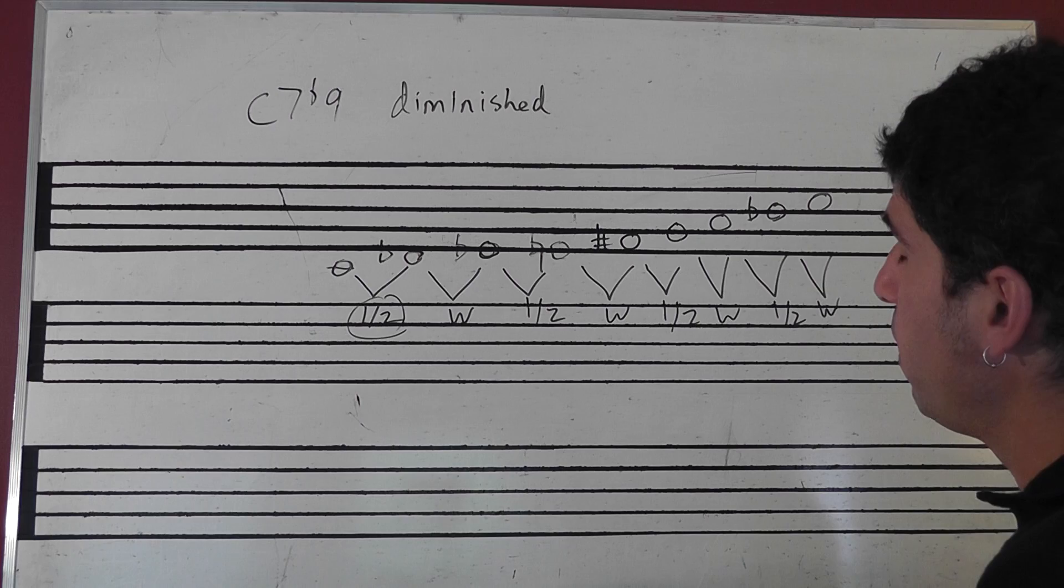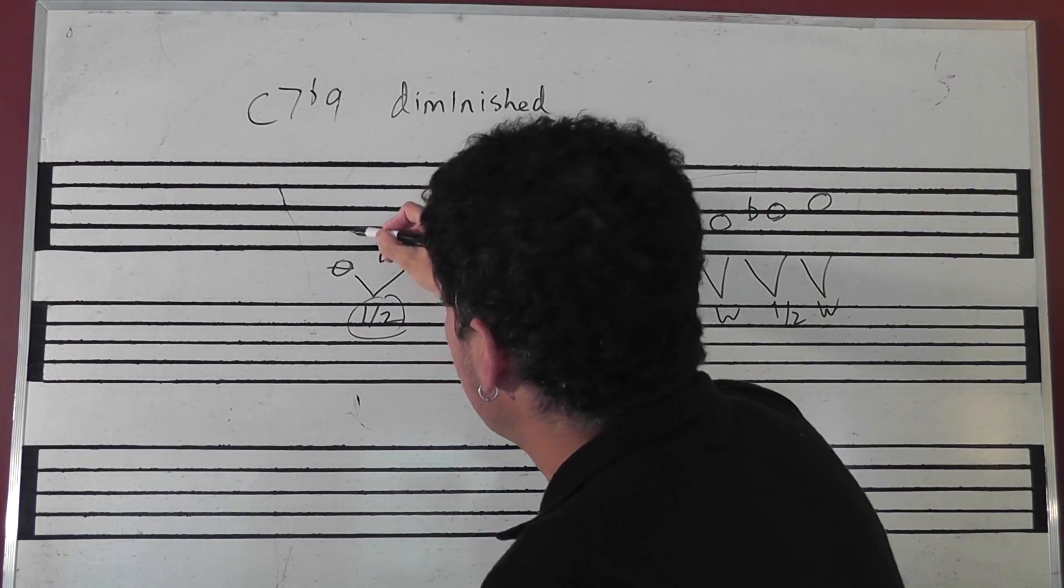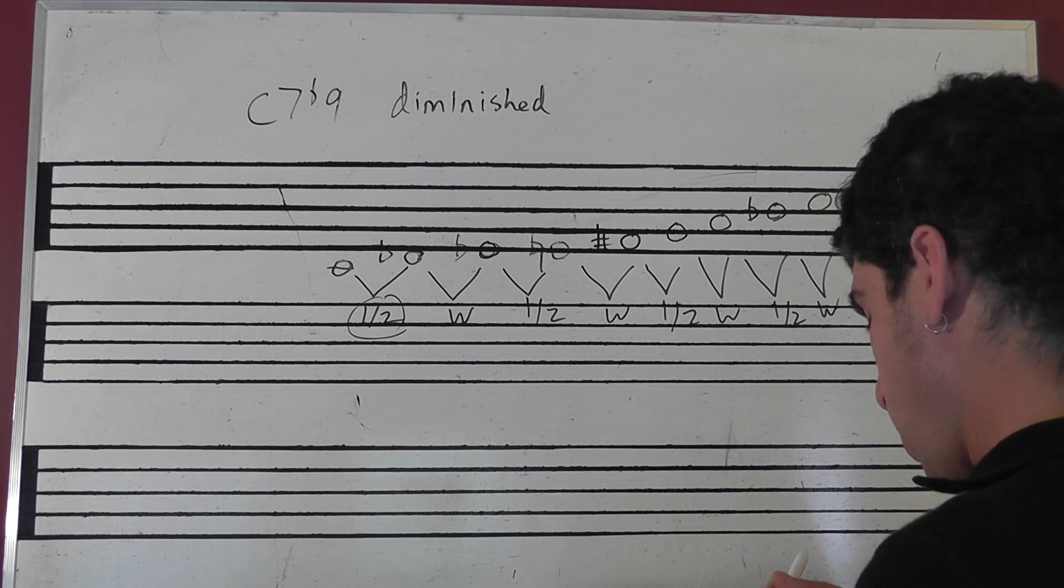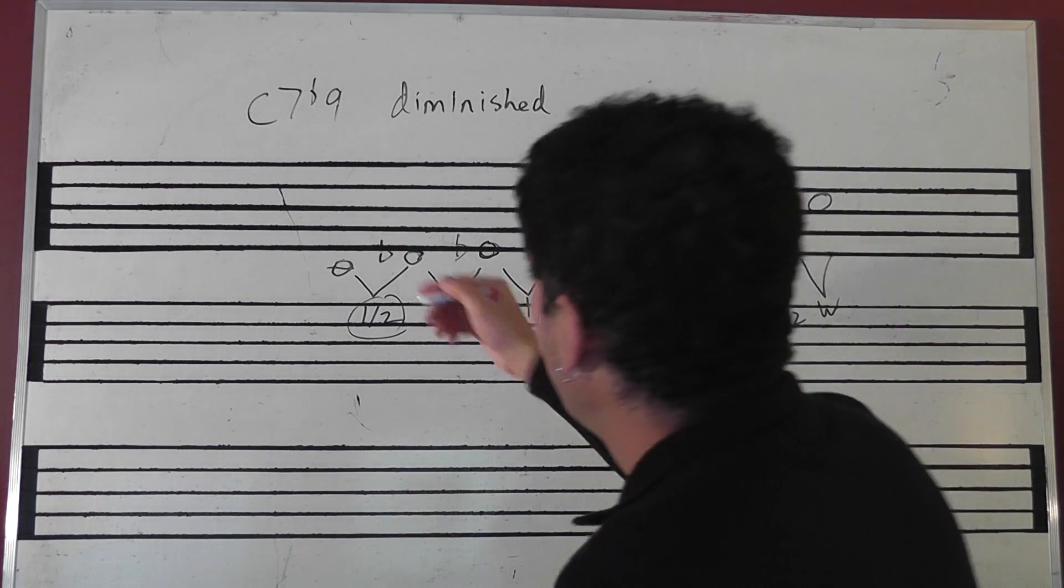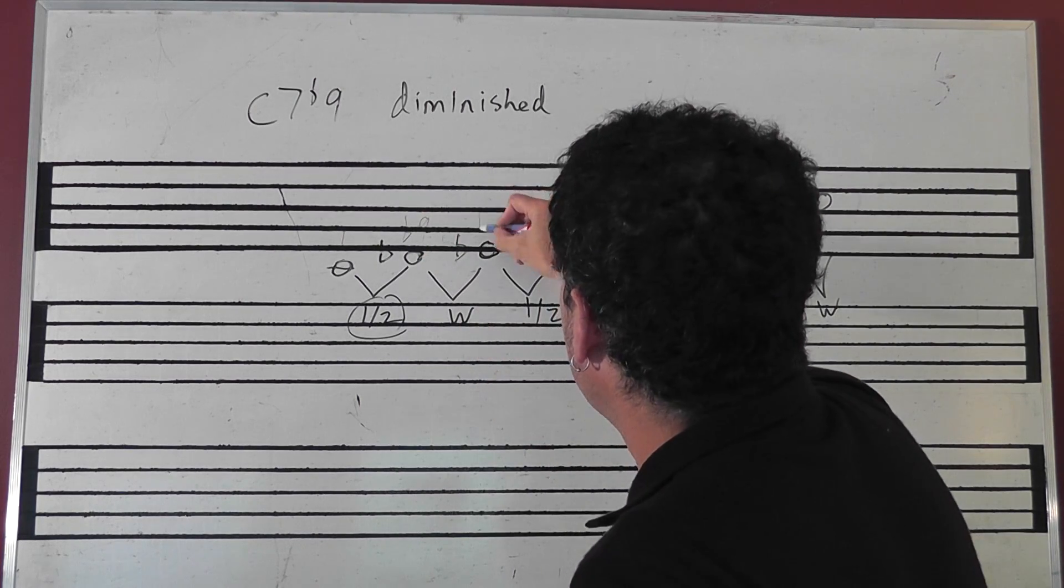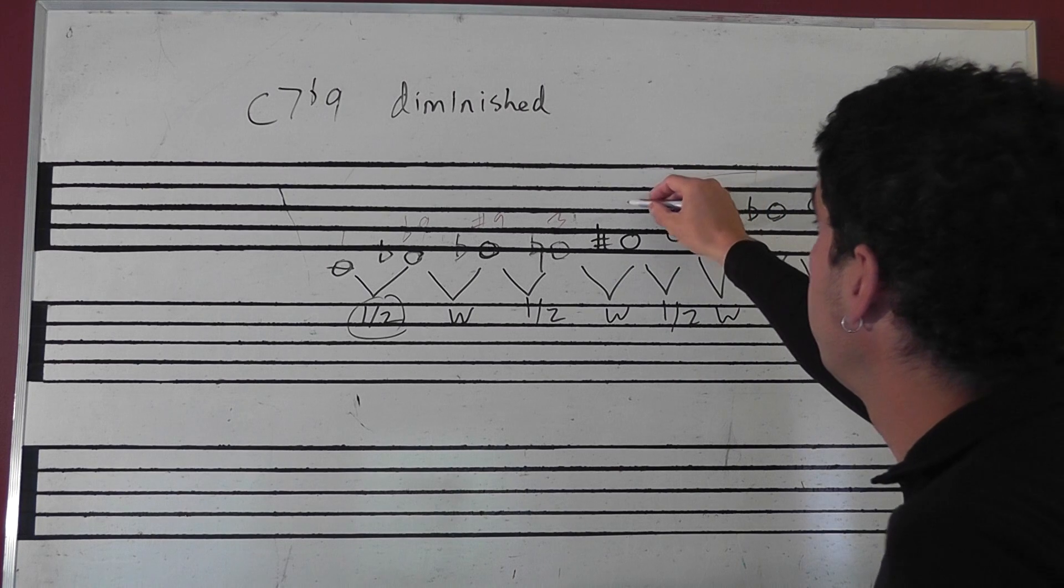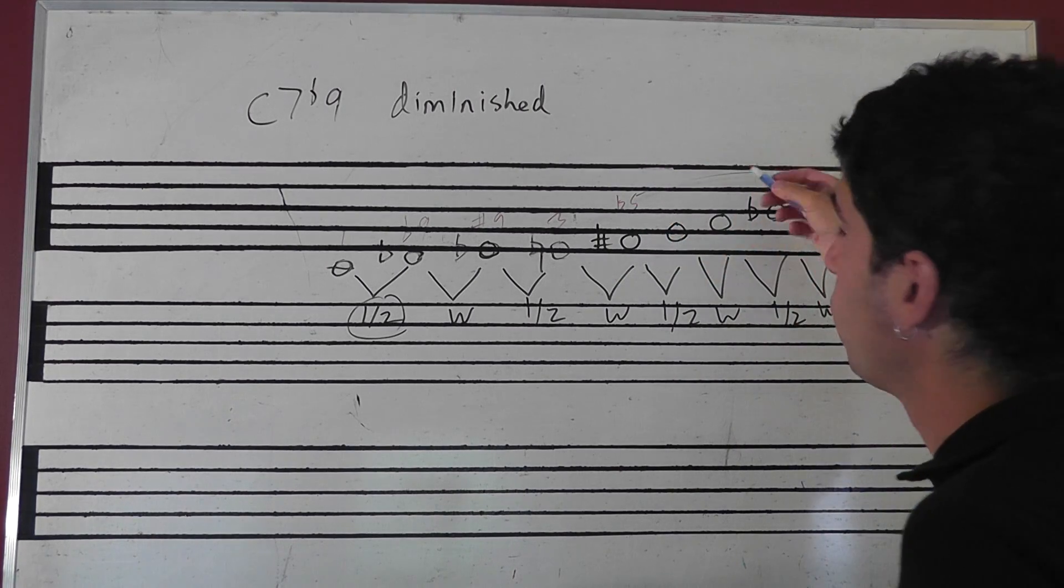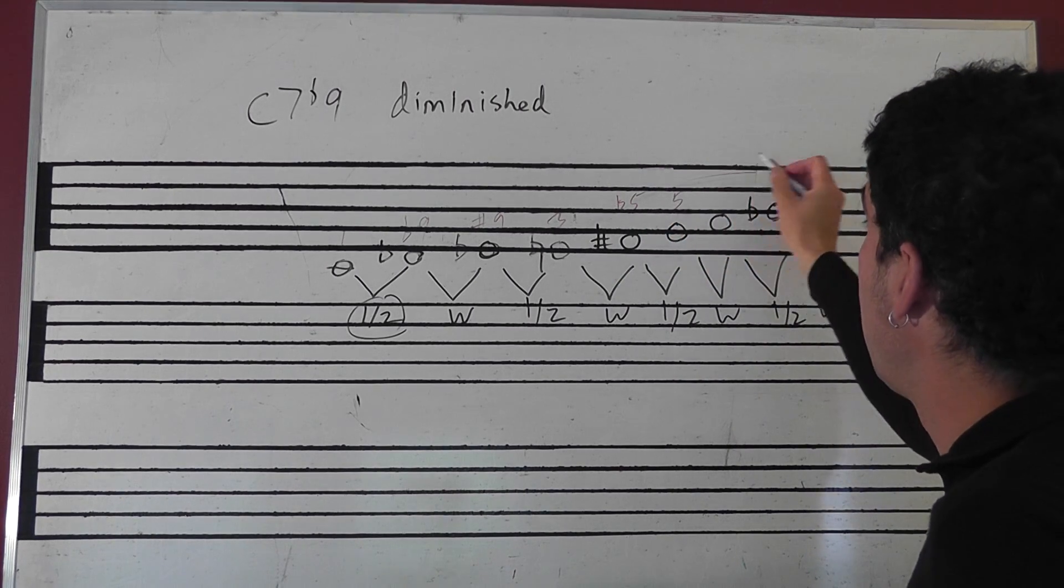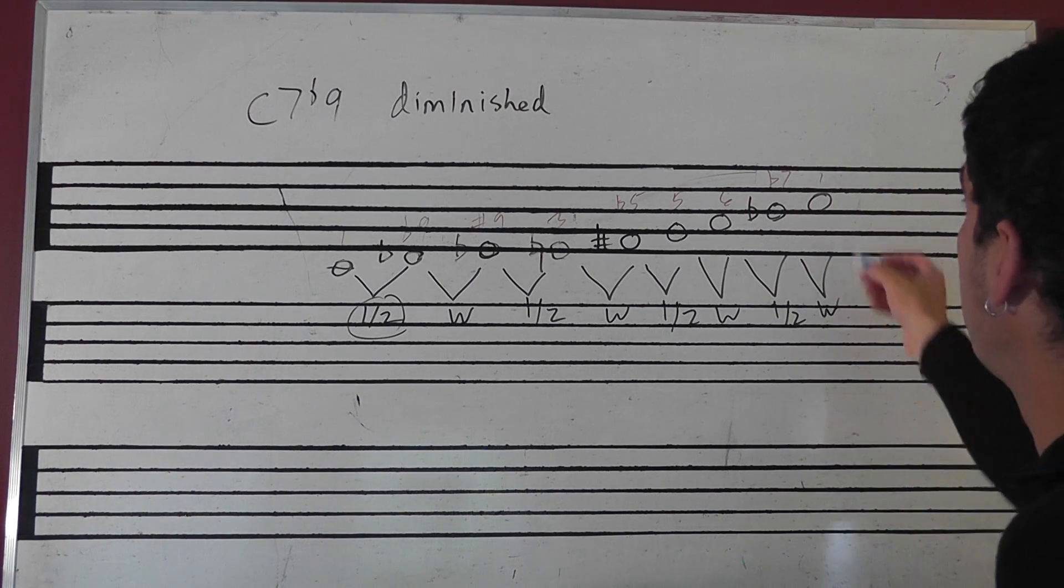And then if we were to analyze this scale, let's change color here. So we've got 1, flat 9, sharp 9, 3, flat 5 or sharp 4, 5, 6, flat 7, and 1 or 8.